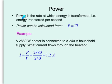Power is the rate at which energy is transformed or transferred per second. And the formula for power is P equal to VI, voltage times current. And here is a simple example to illustrate.